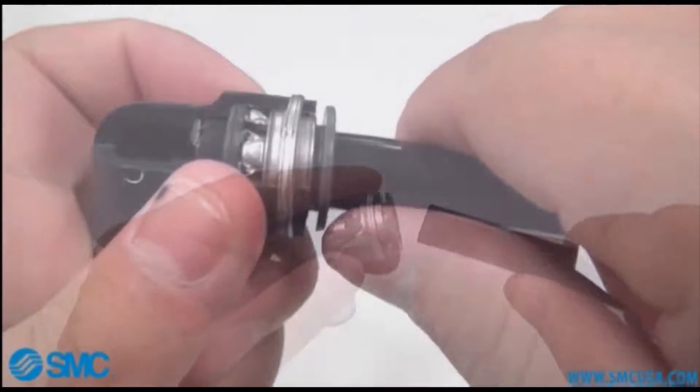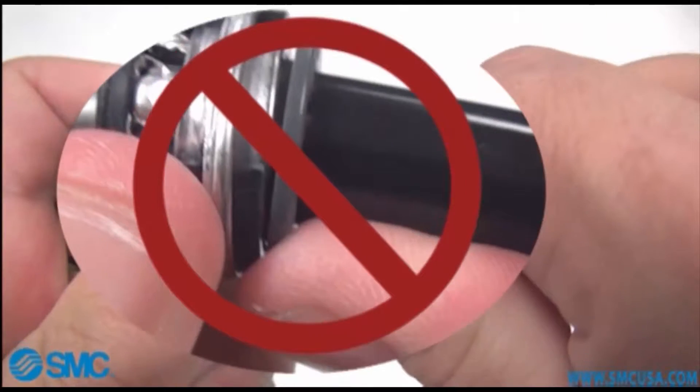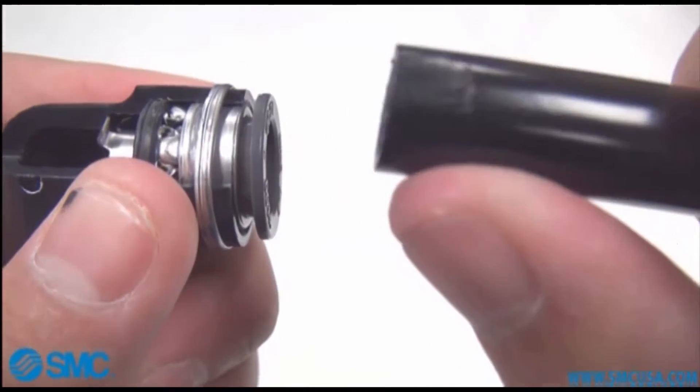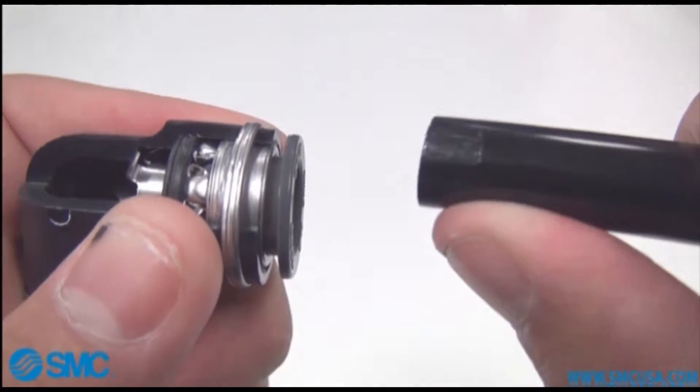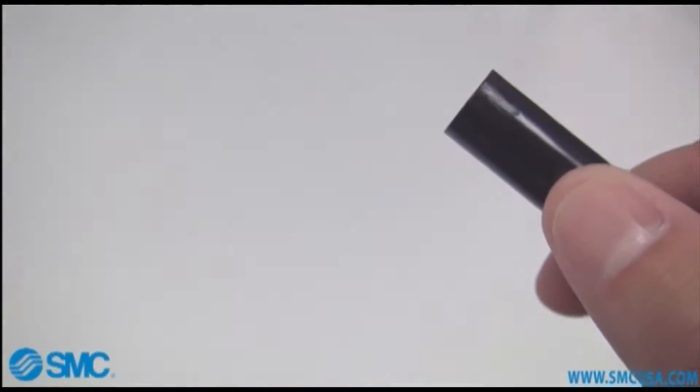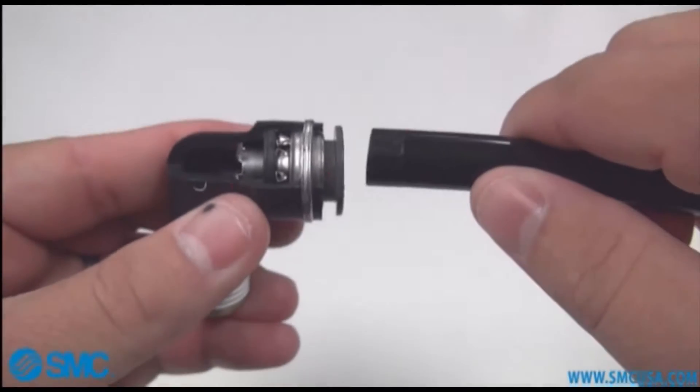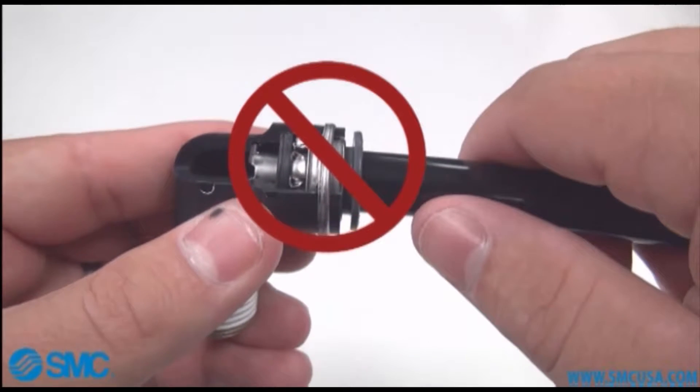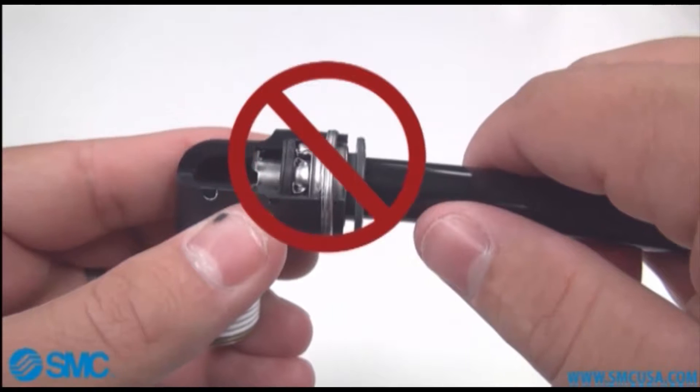An incorrect method of removing the tubing is pressing the button on one side. As you can see when you do this it will create deep scratches on the tube which could potentially create a leak path for air to escape. This would not be good to reinsert into the fitting and would have to be recut properly before reinserting it into the fitting.